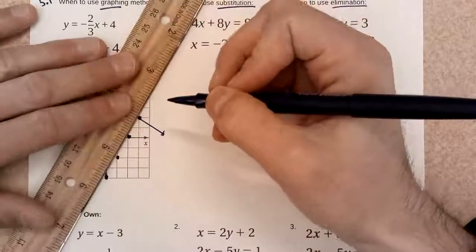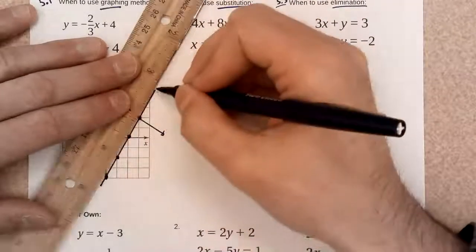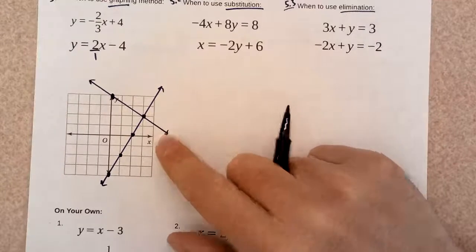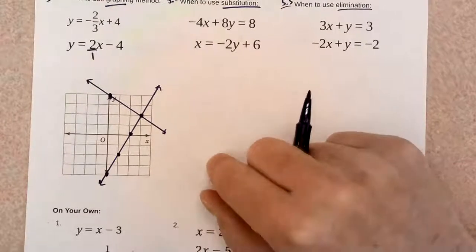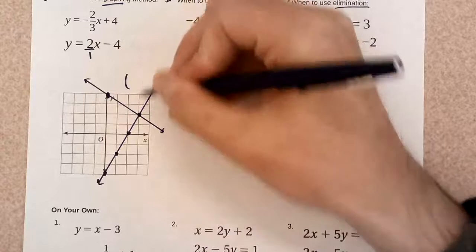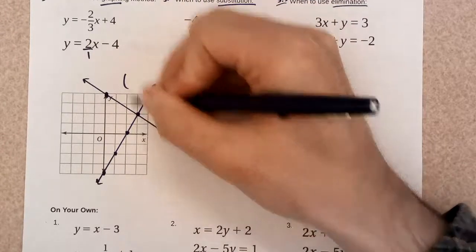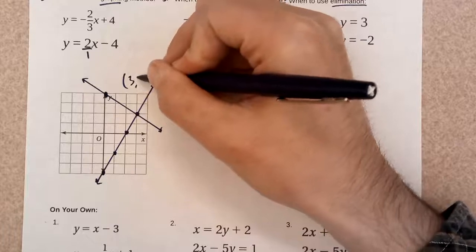And this is how I'm going to solve the system. The solution is just where the two lines intersect. So, in this case, it would be 3, 2. That is the solution.